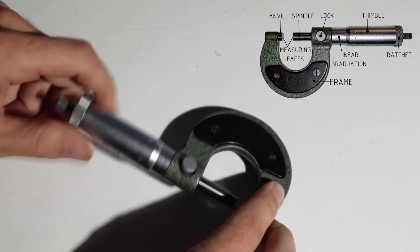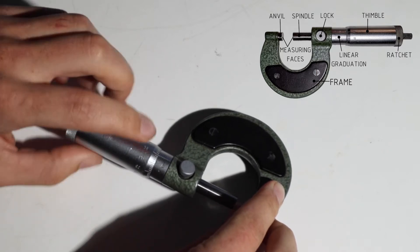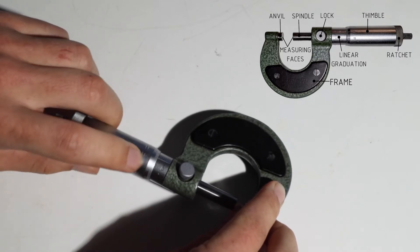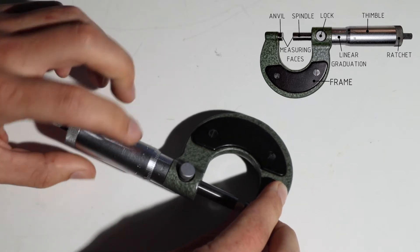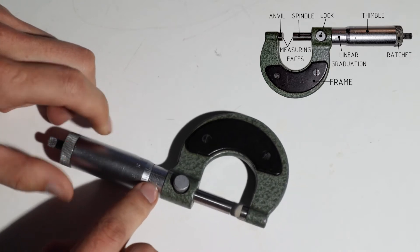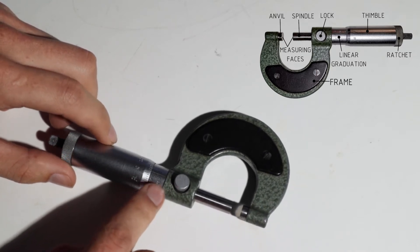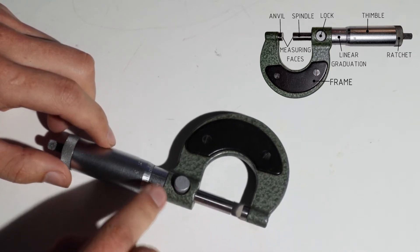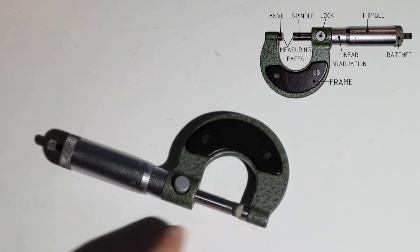And then we can rotate with a thimble here which has our graduation that shows us the hundredth and tenth of a millimeter. Then our sleeve here has a graduation also and it shows us the whole millimeters and half millimeters as well.